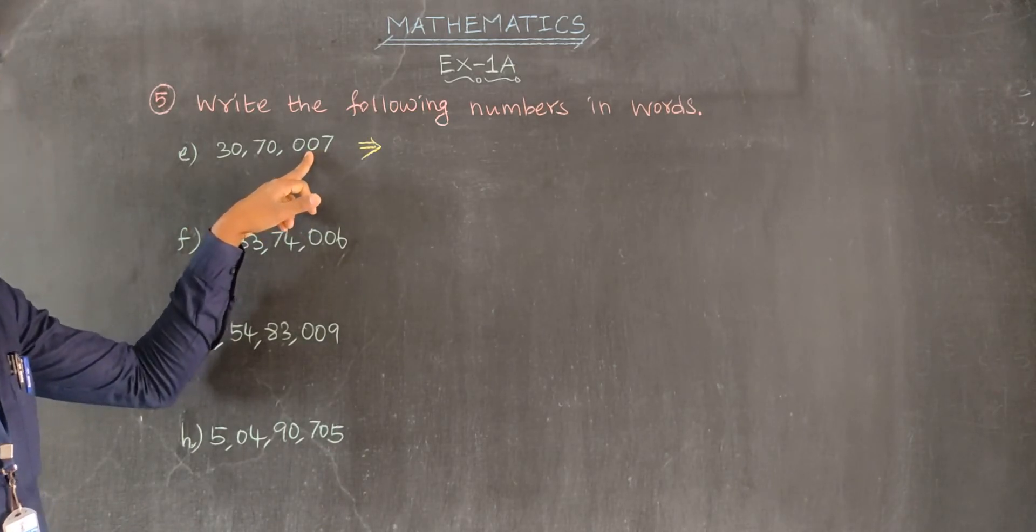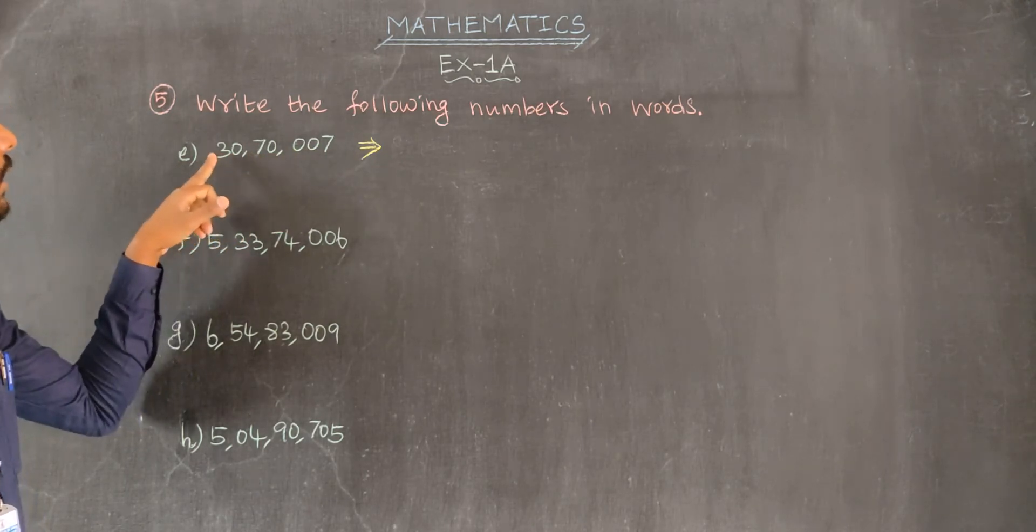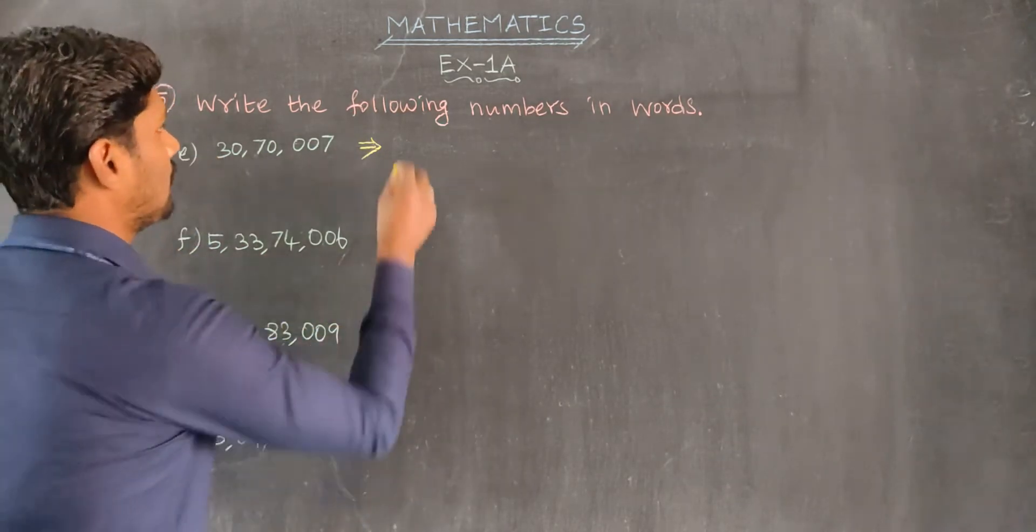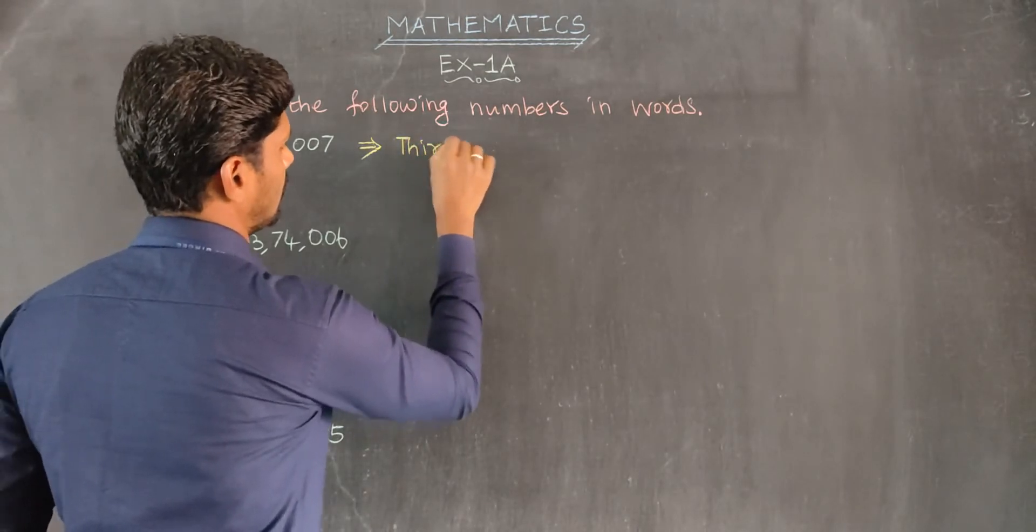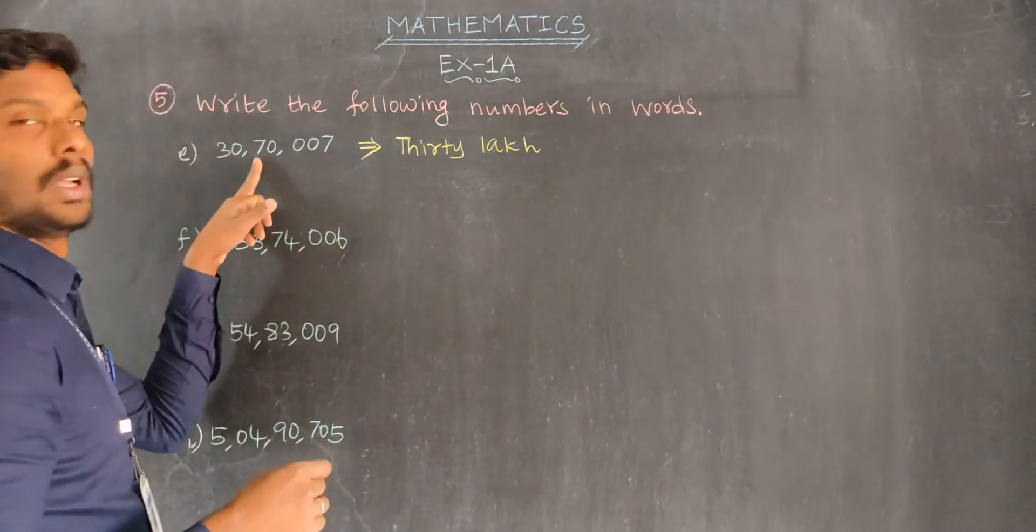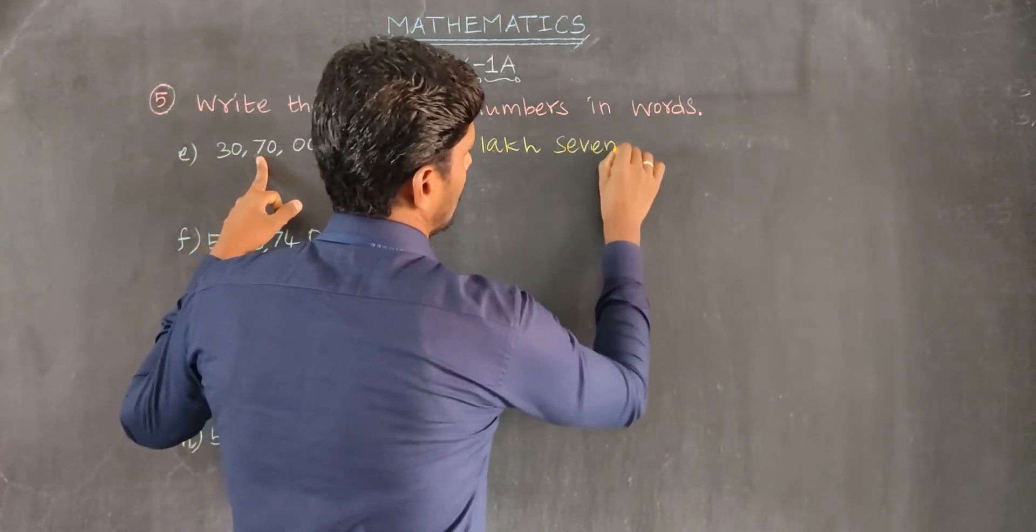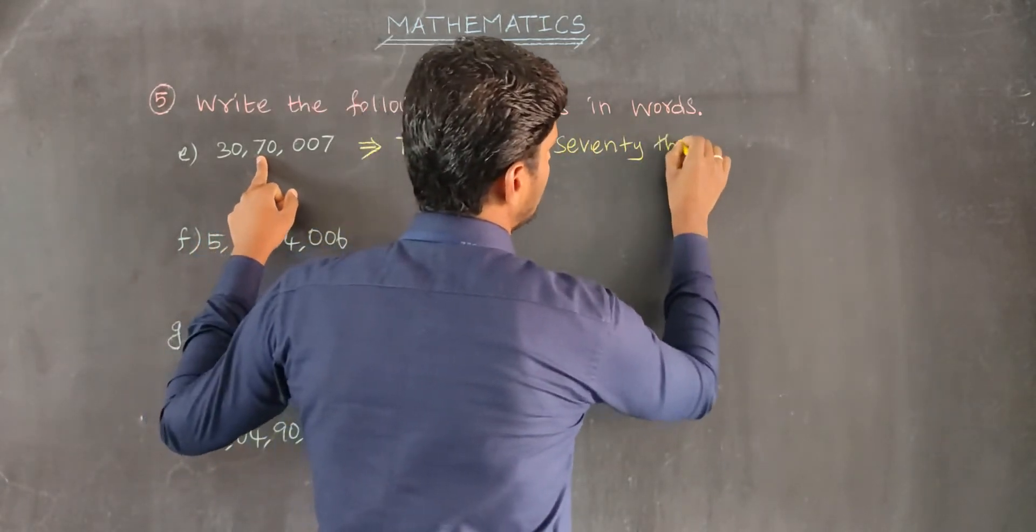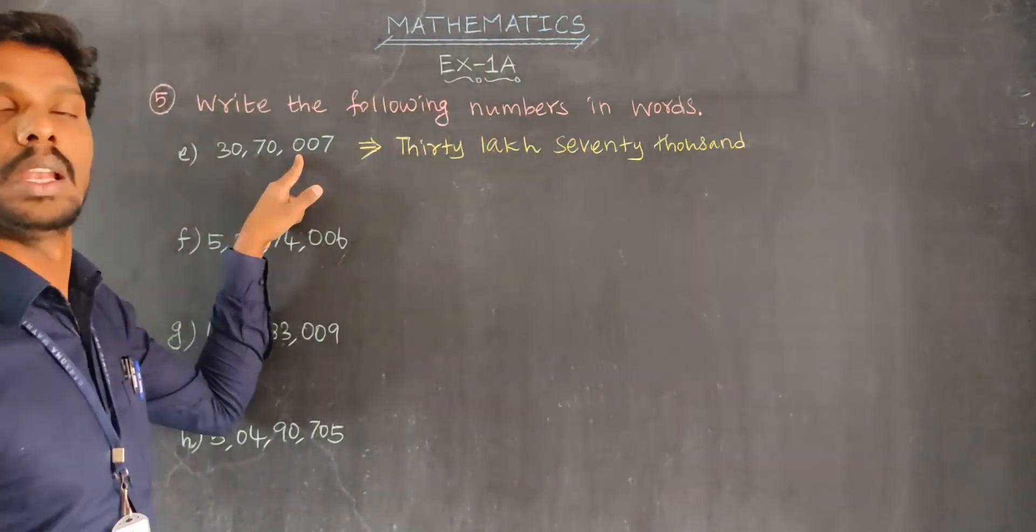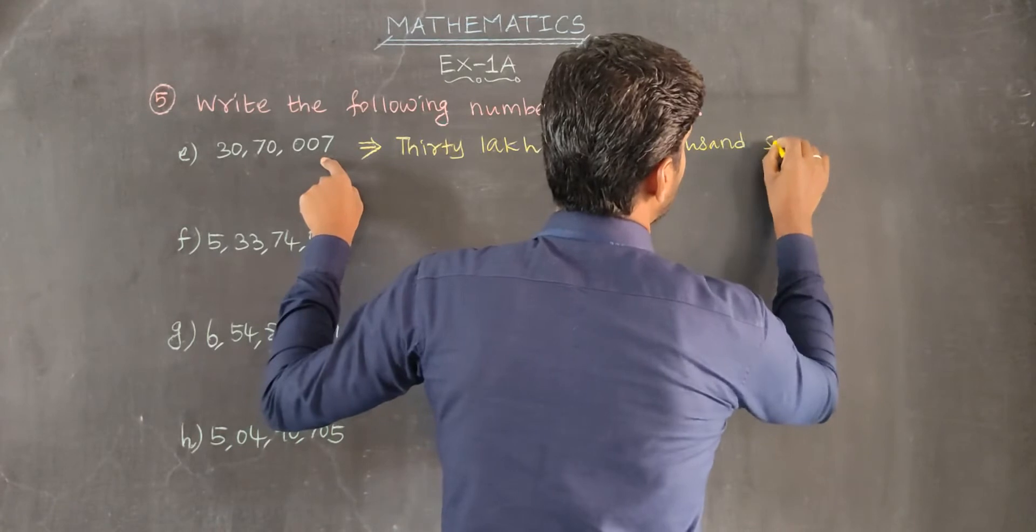Ones, tens, place value. Ones, tens, hundred, thousand, ten thousand, lakh, ten lakh. Ten into three is thirty thousand. I think lakh value, ten thousand. Hundred value, seventy thousand. Tens value none. Later one's value seven. Then twenty-eight lakh seventy thousand seven.